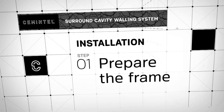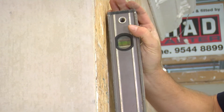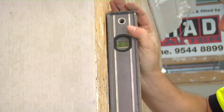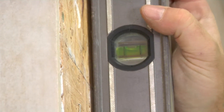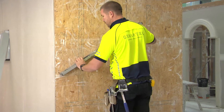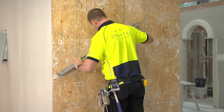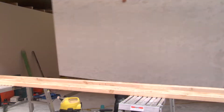The first step is to prepare the frame, ensuring to make it square and plumb before affixing any product. This may require packing some studs to create a uniform fixing plane.